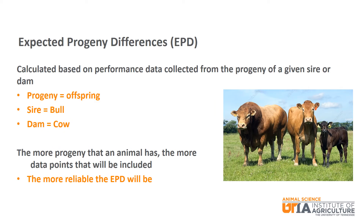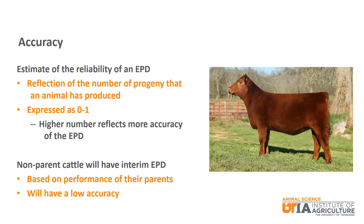EPDs are calculated based on data collected from progeny of a given animal. Progeny refers to offspring of an animal; the sire is the bull and the dam is the cow. As you would expect, the more progeny that an animal has, the more data points included in their EPDs, and there is more confidence or reliability in those EPDs. The accuracy of an EPD is the estimate of its reliability, expressed as a number between zero and one, with a higher number reflecting more accuracy.